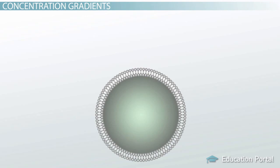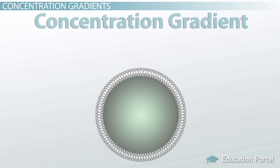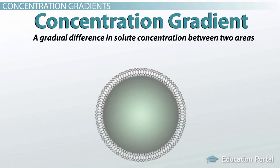In this lesson, we'll discuss methods of transporting solutes across a concentration gradient. A concentration gradient is a gradual difference in solute concentration between two areas. In this case, it's the difference in solute concentration between the outside of the cell and the inside of the cell.